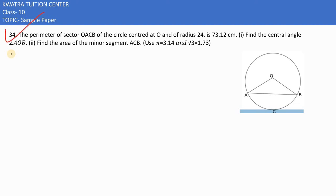Here in this case, part 34 says perimeter of sector AOCB of the circle centered at O with radius 24, and the perimeter is 73.12 cm. They are saying find the central angle, and in the second part find the area of the minor segment ACB.